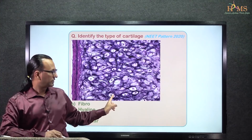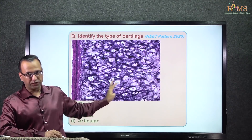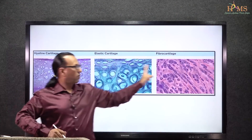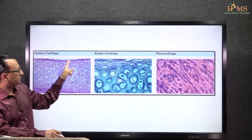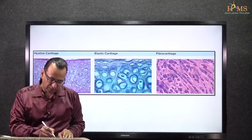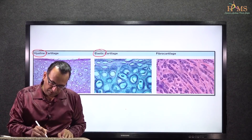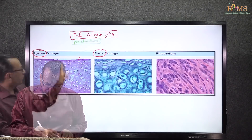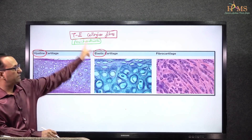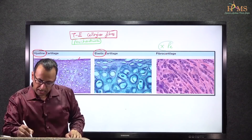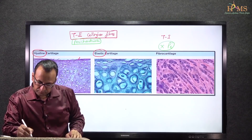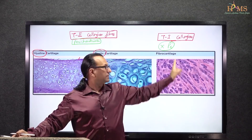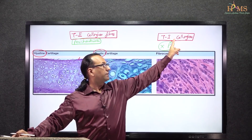Before we comment more upon this elastic cartilage, let us look at the three types and how to identify them from each other. The three types are hyaline, elastic, and fibrocartilage. Hyaline and elastic both have type 2 collagen fibers and they have perichondrium. Fibrocartilage does not have perichondrium and has type 1 collagen predominantly, making it an atypical cartilage.